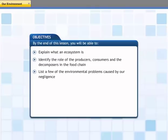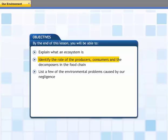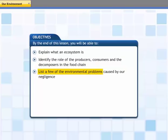By the end of this lesson, you will be able to explain what an ecosystem is, identify the role of the producers, consumers, and decomposers in the food chain, and list a few of the environmental problems caused by our negligence.